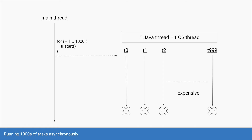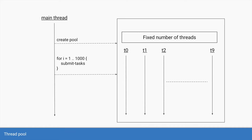To extend this even further, what if you want to run 1000 tasks asynchronously? The problem is that in Java, one Java thread corresponds to one operating system thread. Running the for loop 1000 times would create 1000 threads, and creating a thread is itself an expensive operation. What you rather want is a fixed number of threads — say 10 — created up front. That's called a thread pool. You submit 1000 tasks to them, and the threads pick up and complete tasks. For example, t0 picks task one, completes it, then immediately starts task two.